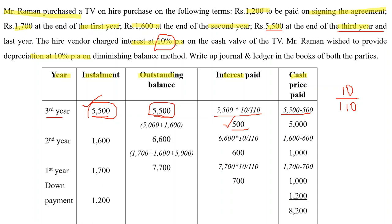Now for the second installment: the installment amount is ₹1,600. The outstanding balance when the second installment is due includes both the second and third installments — ₹1,600 plus ₹5,000 (the cash price of the third installment) = ₹6,600. Interest = ₹6,600 × 10/110 = ₹600. Cash price for second installment = ₹1,600 − ₹600 = ₹1,000.